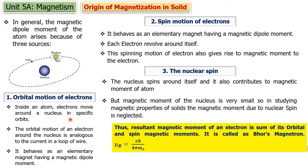The orbital magnetic moment is caused due to the orbital motion of electrons, and the spin magnetic moment is caused due to the spin motion of electrons. The sum of these magnetic moments is the resultant magnetic moment of an electron. The smallest magnetic moment possessed by an electron is called Bohr's magneton, and it is given by eh upon 4πm, where m is the mass of the electron. So each atom inside the solid has its magnetic moment, and the total magnetic moment of the solid is the sum of magnetic moments of its particles.